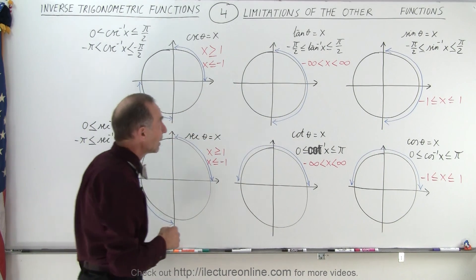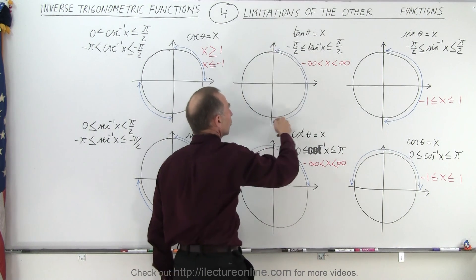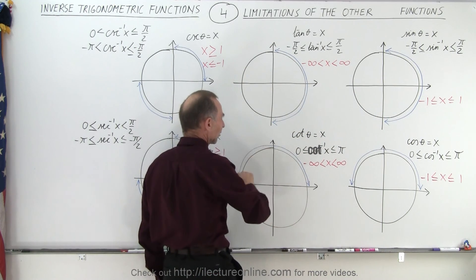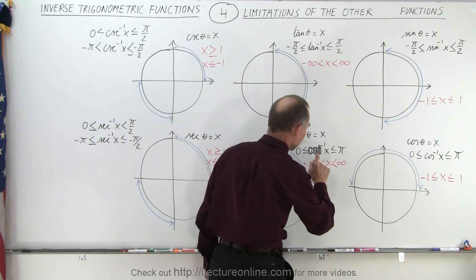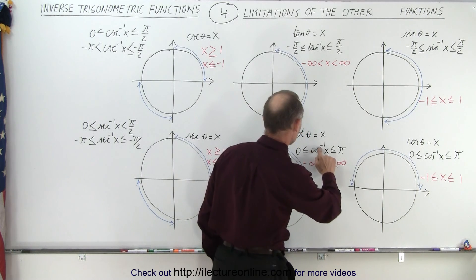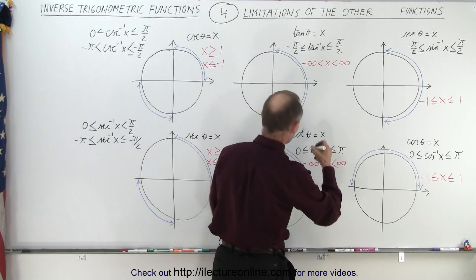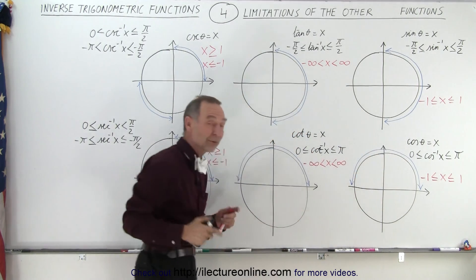When we take a look at the inverse tangents, notice that the inverse tangents have the same region of angle associated with the inverse tangent as the sine does. And the inverse cosine has the same angle region associated with the inverse cotangent function. This should be a cotangent, not a cosine, cotangent function. And notice that the range of angle is the same as the cosine.